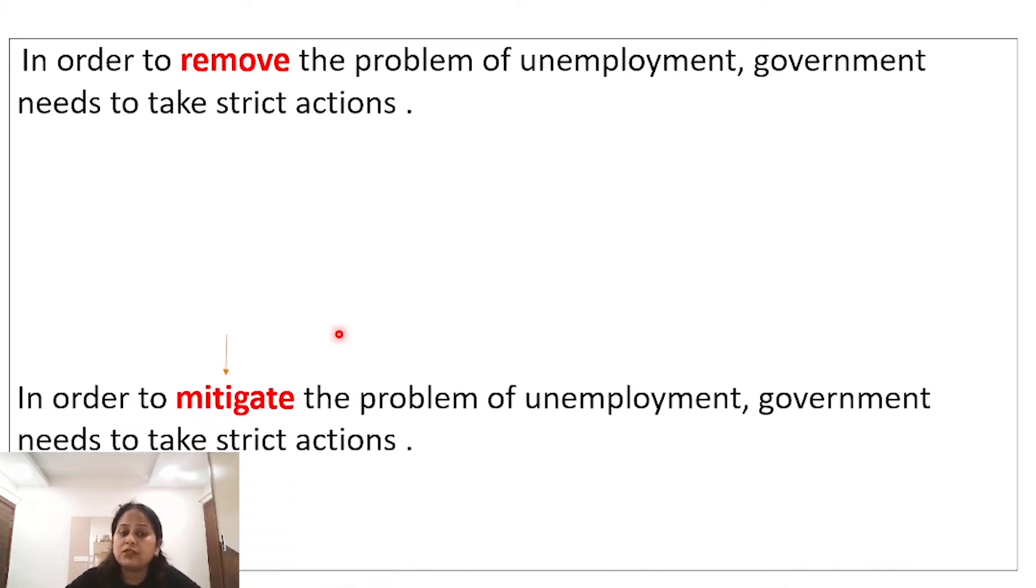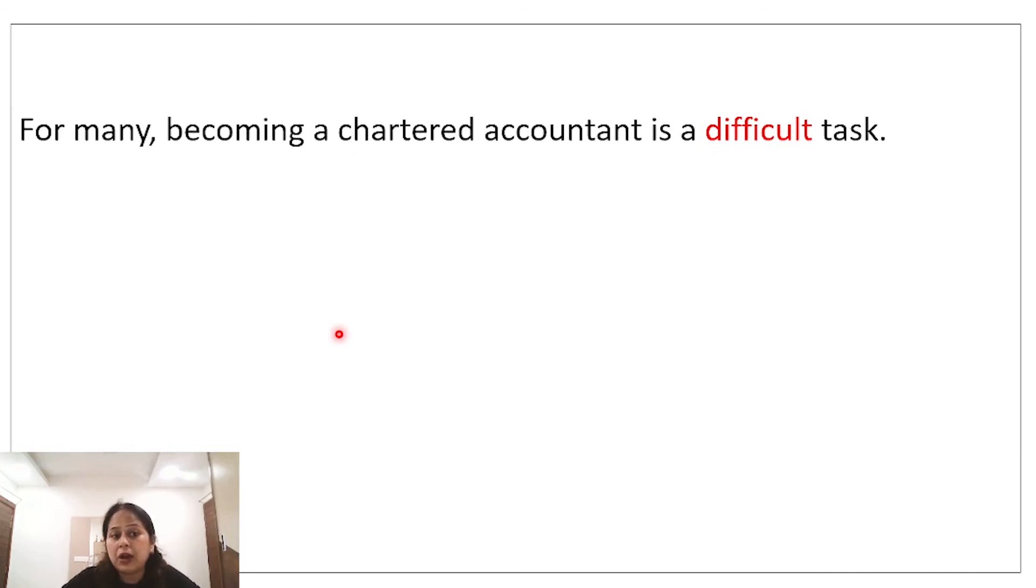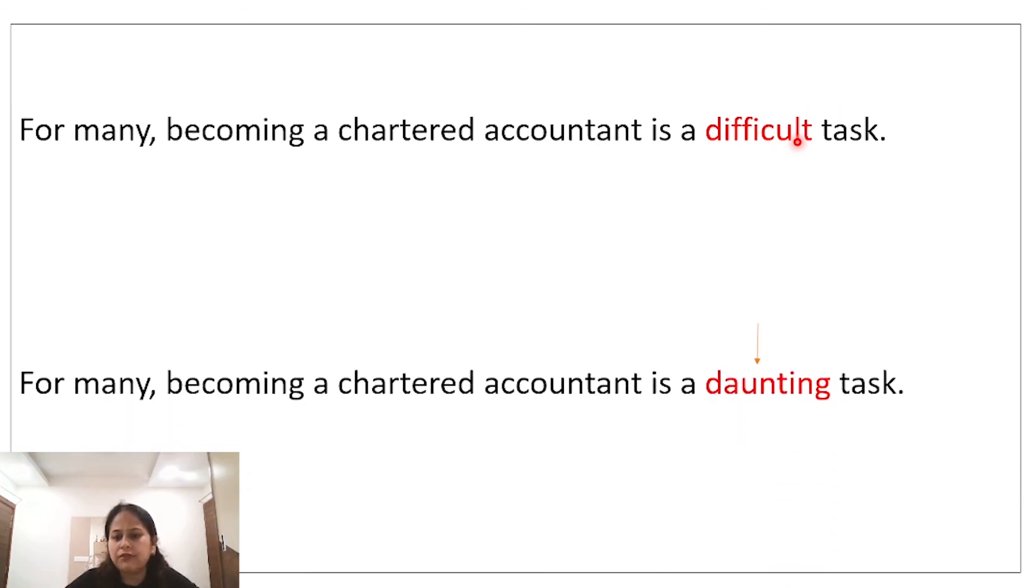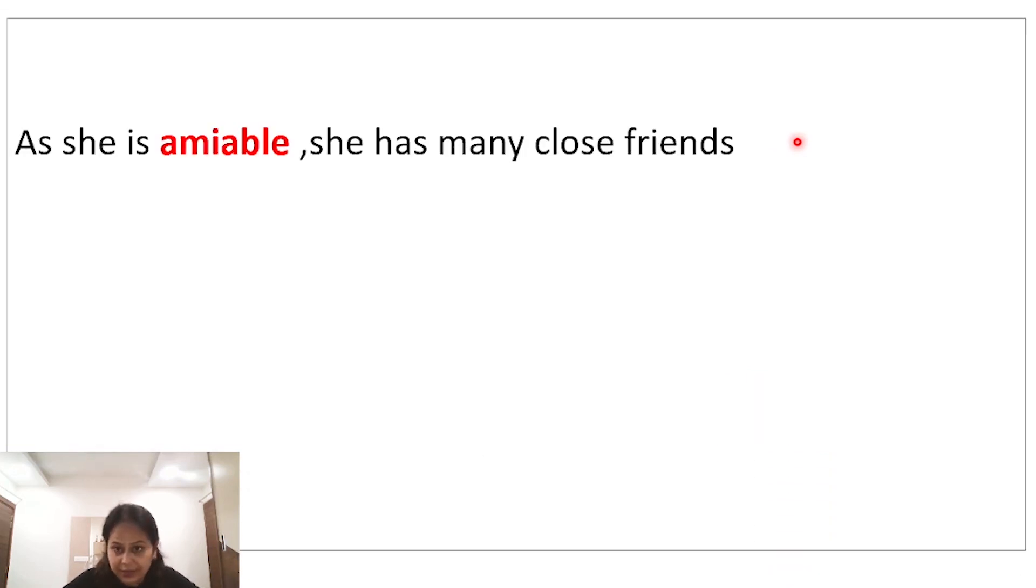For many, becoming a chartered accountant is a difficult task. Difficult ki ek synonym use kar sakte hai, we can use is a daunting task. She is amiable, she has many close friends. Amiable ka matlab hota hai ki woh bahut zyada friendly hai, isliye uske kaafi close friends hain.